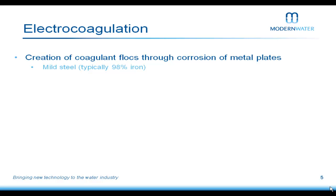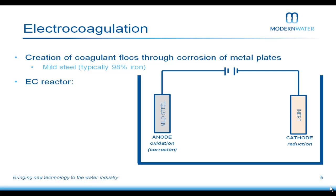Electrocoagulation is a little different. The main difference is the way we supply or provide floc into solution. Whereas with chemical dosing you use ferric chloride to provide your floc, here we use metal plates and actively corrode them to form our flocculant. The type of metal plates can differ: mild steel imparts iron floc, similar to iron chloride; aluminium plates are used similarly to alum or aluminium sulfate.